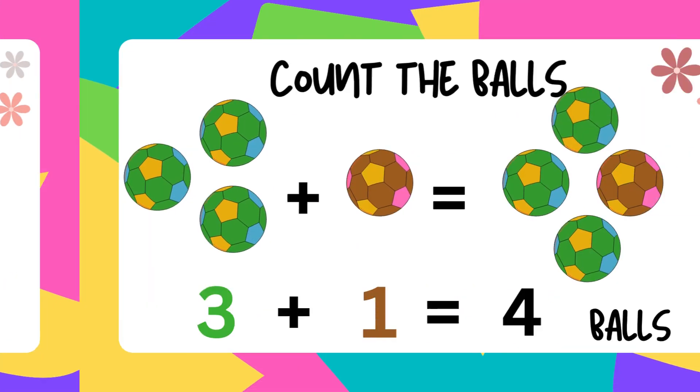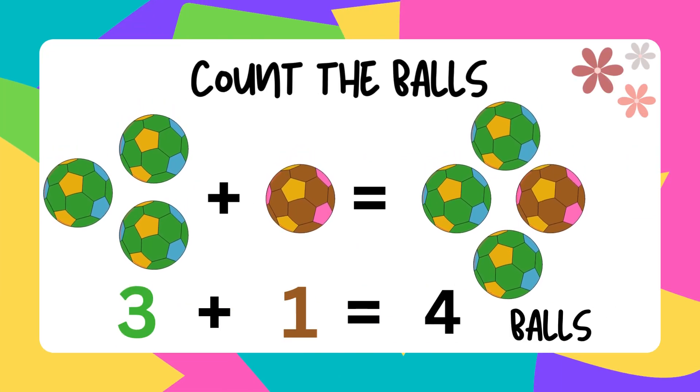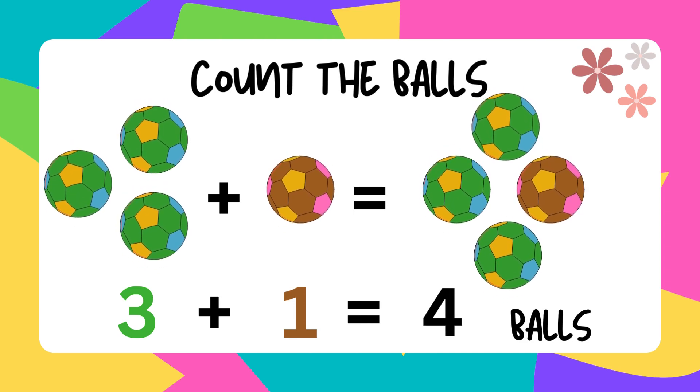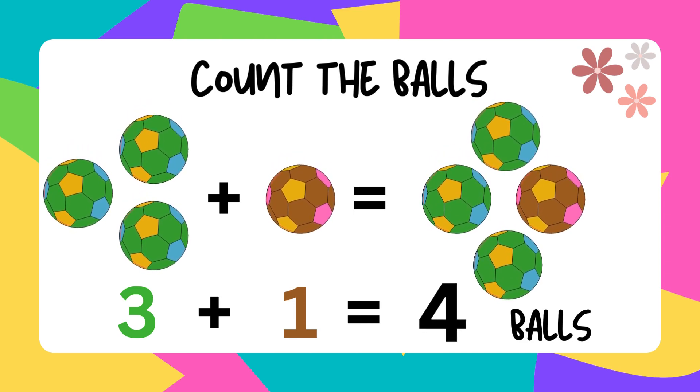Three green balls plus one brown ball. The sum of balls is four.